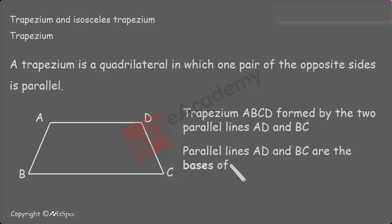Trapezium ABCD is formed by the two parallel lines AD and BC. The two parallel lines AD and BC are called as the bases of the trapezium and the other two sides formed by the lines AB and DC are called as the legs of the trapezium.